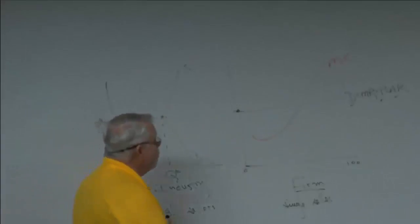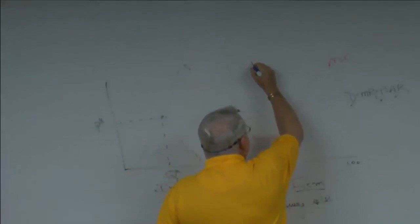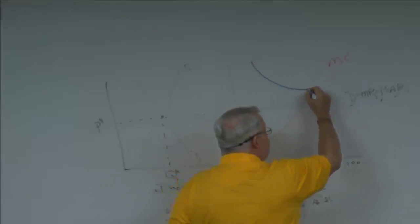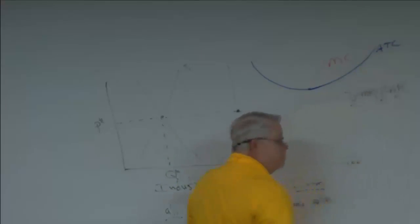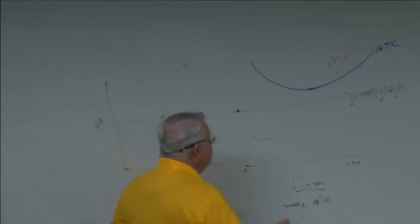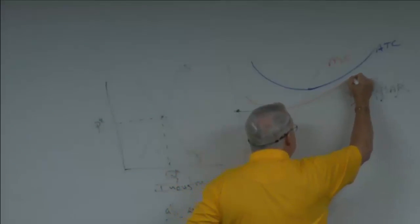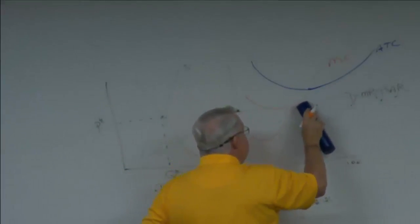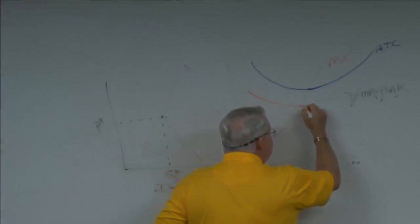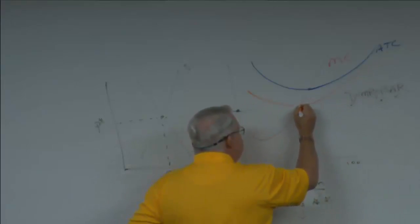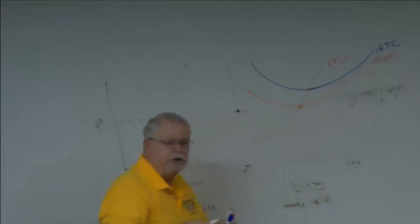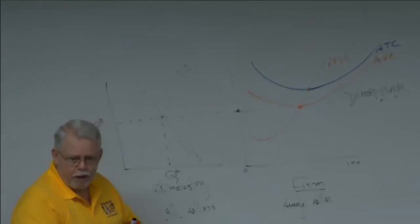And an average cost curve — it falls, hits its minimum at the intersection with marginal cost, and then climbs. That's average total cost. In perfect competition — not in the others — you will also see the average variable cost curve, which falls, hits its minimum, then rises, also intersecting marginal cost at its minimum. There is much to be made about those two different curves and what they imply for the firm.